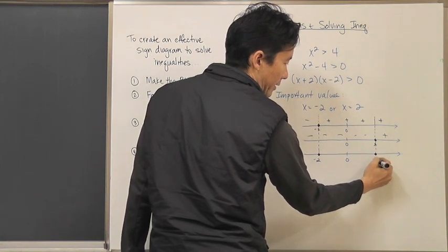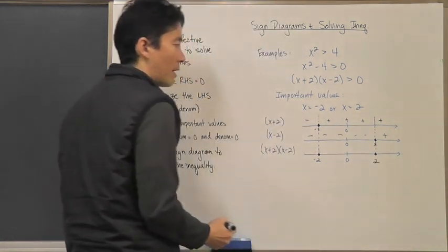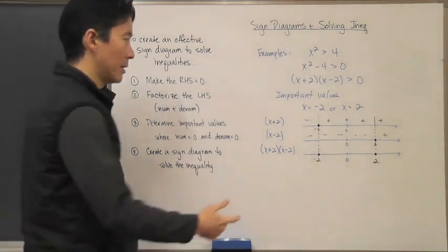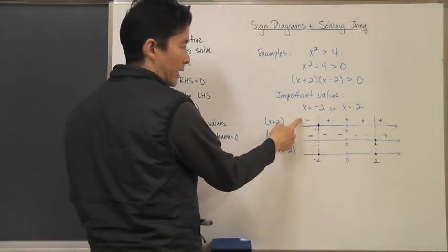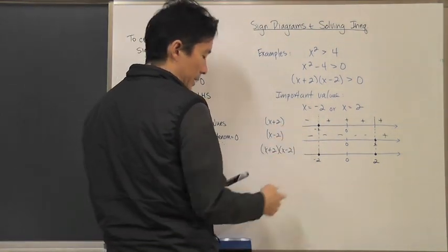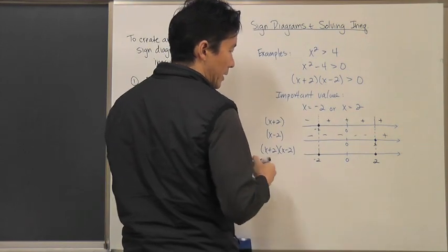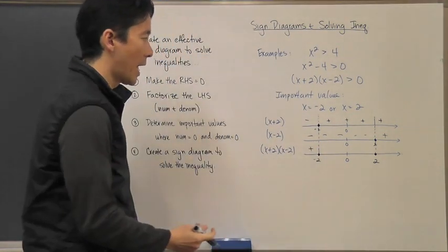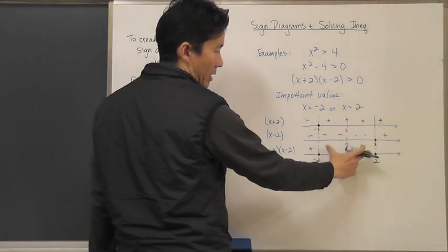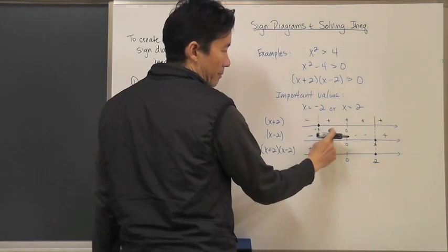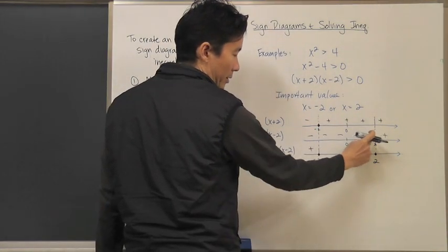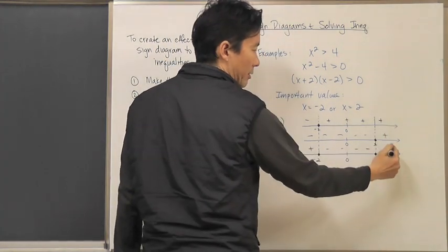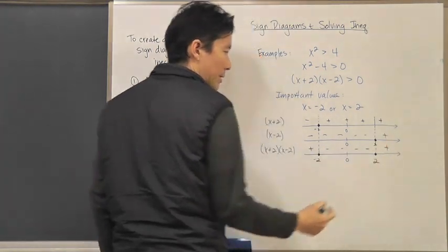That's a zero value there. Now I'm going to take a look at everywhere else. If I take a negative times a negative and multiply them together, that's going to be a positive number. Anything in between — a positive times a negative — is of course going to give all negative numbers. And over here to the right of 2, that's going to be a positive number.